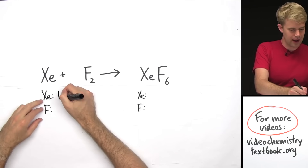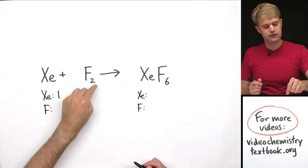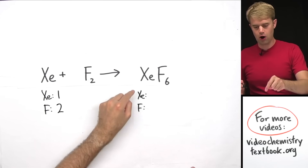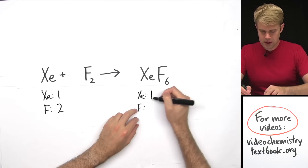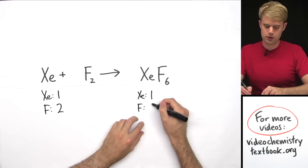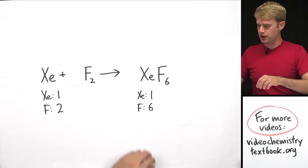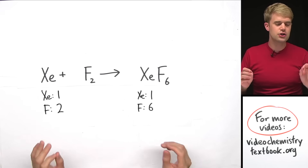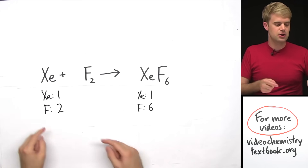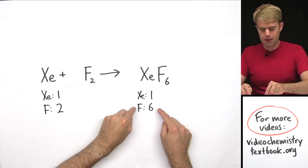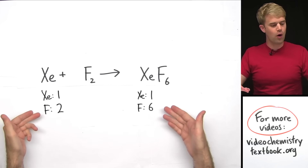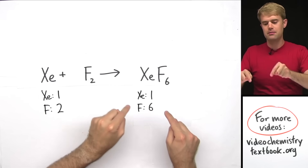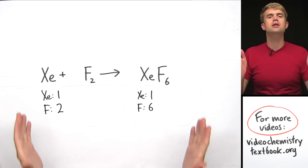Over here, I have one xenon atom and F₂, so I've got two fluorines. Over here, also one xenon and F₆, so I've got six fluorines. This equation isn't balanced yet because we have different numbers of atoms for one of the elements — two fluorines here but six fluorines here.